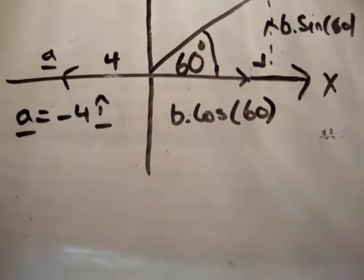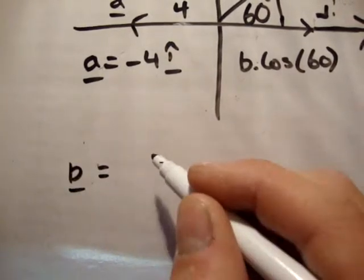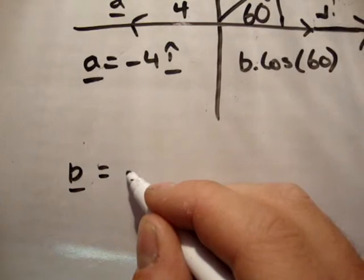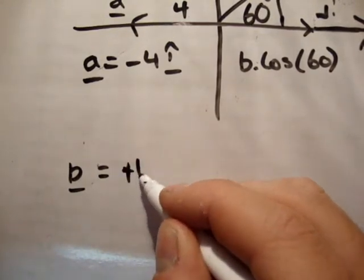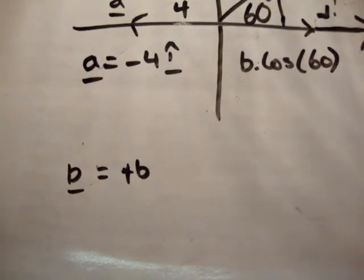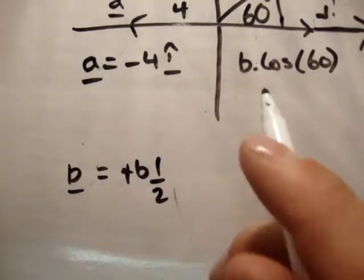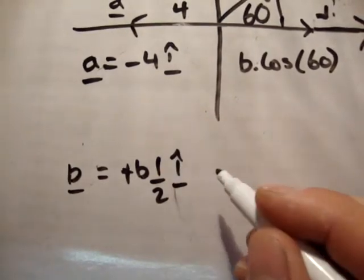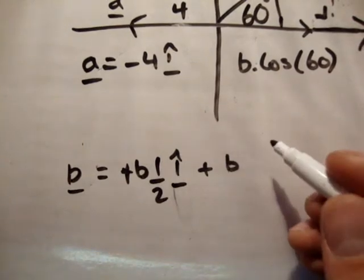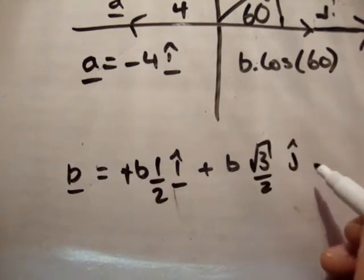So that means that b is equal to plus, because remember this is plus plus, so it's plus b times the cos of 60. The cos of 60 is root 3 over 2, wrong, cos of 60 is a half. That's in the i-hat direction, plus b times the sine of 60, which is root 3 over 2, in the j-hat direction.